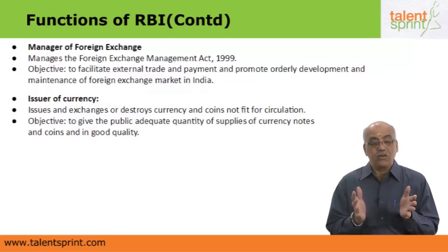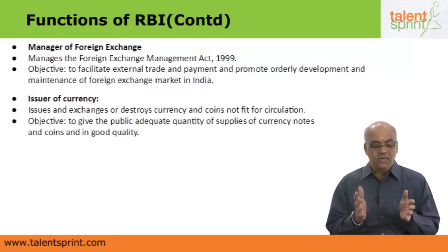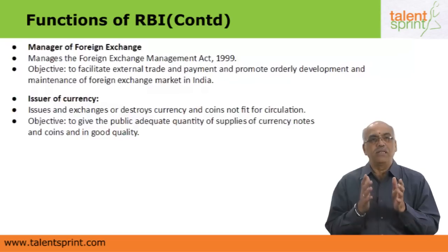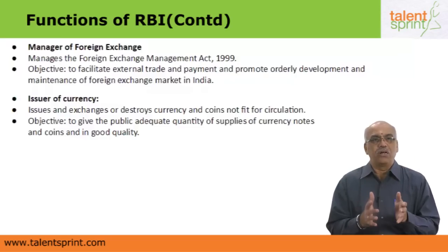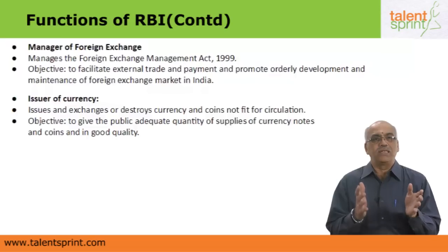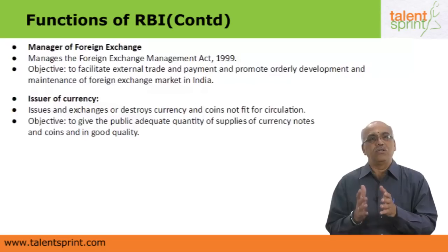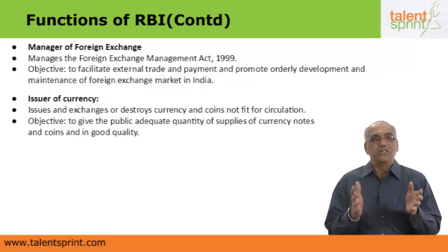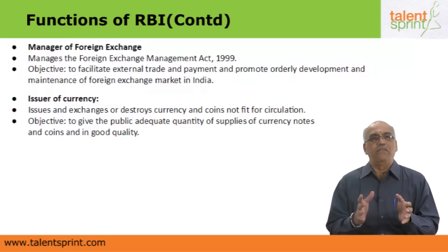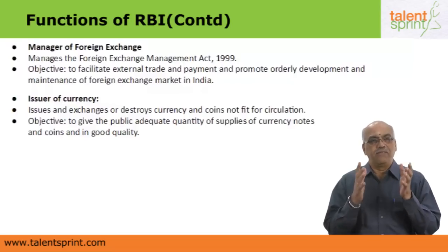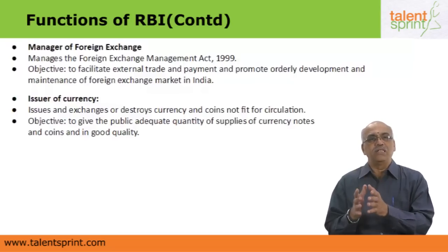The objective is to give the public an adequate quantity of currency and coins in good quality. It is not only good quality but they should also be legal tender — meaning currency that can be accepted legally. For example, today it is illegal to accept or give old 500 and 1000 rupee notes. So it is the duty of the RBI to ensure the public has a constant supply of good, fit-for-circulation currency notes that are legal tender.